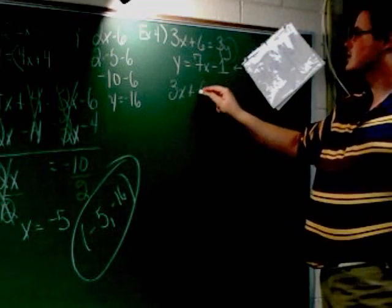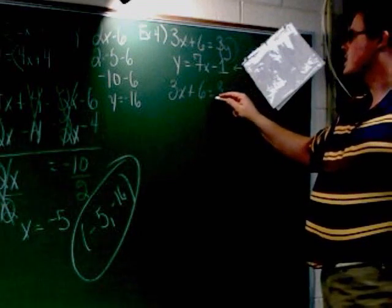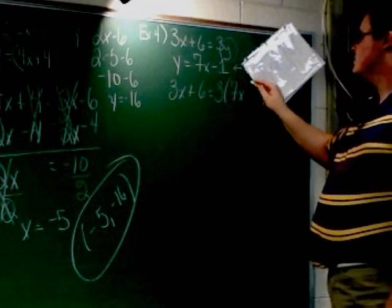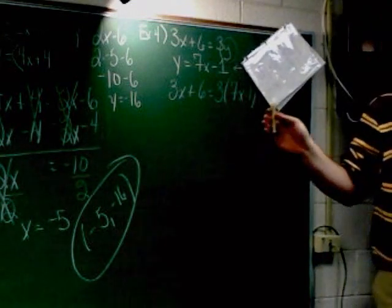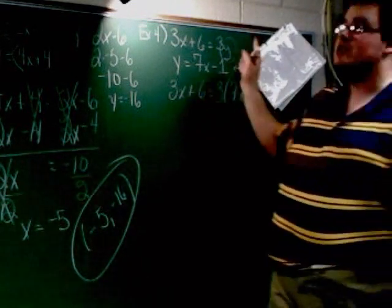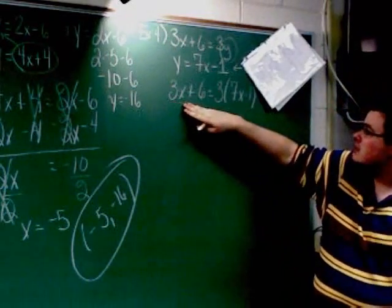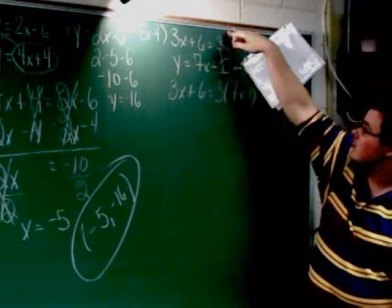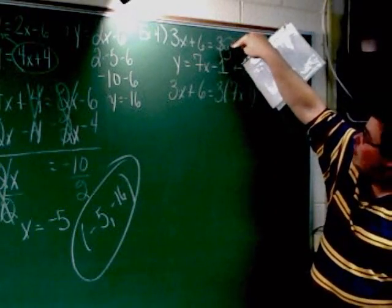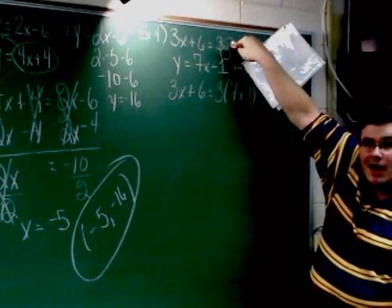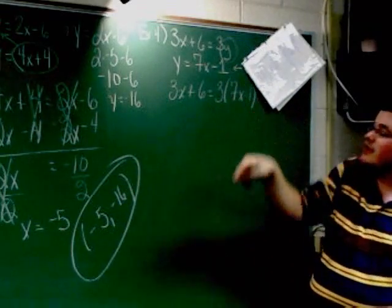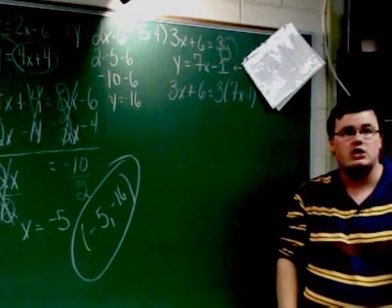I've got 3x plus 6 equals 3 times 7x minus 1. Notice, again, like I said earlier, I didn't change anything else here. I've still got 3x plus 6, still got the equals, still got the 3. The only thing that changed is this y changed into 7x minus 1. It's the only change I made.